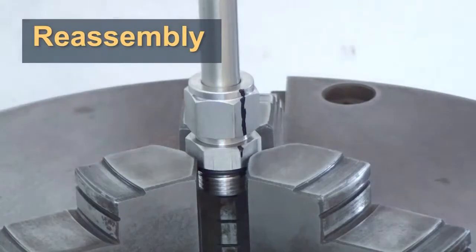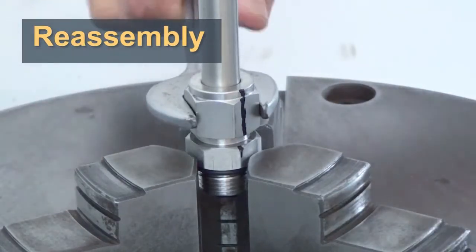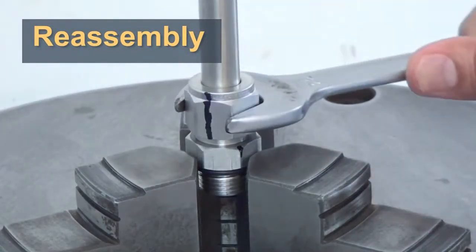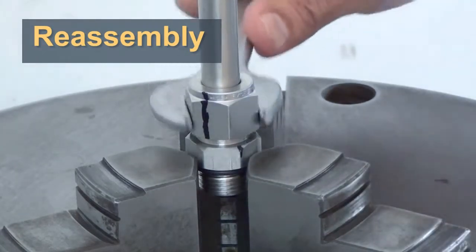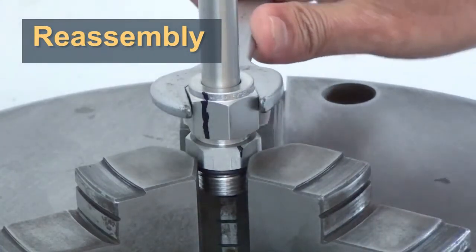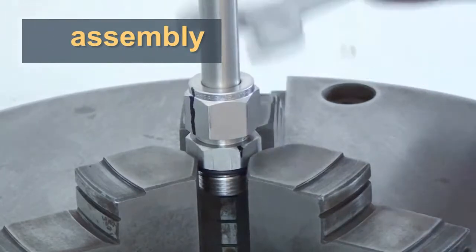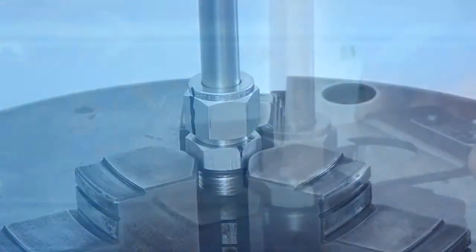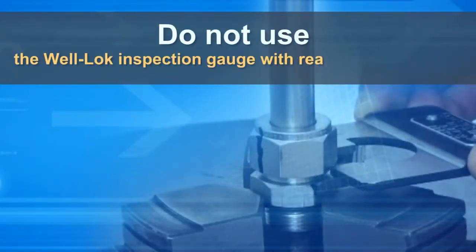Rotate the nut with the wrench to the previously marked position. This time, you will find a significant increase in resistance. Use a wrench to tighten the nut a bit further. Do not use the Well-Lock inspection gauge with reassembled fittings.